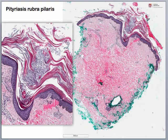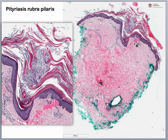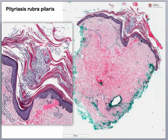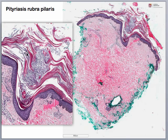On our next case, what we see is a scale with hyperkeratosis, not a whole lot going on in the epidermis, and maybe just a sparse perivascular infiltrate in the dermis. The hyperkeratosis does seem to be centered around a hair follicle. When we look at it on a more medium power view, what we see is alternating parakeratosis and orthokeratosis.